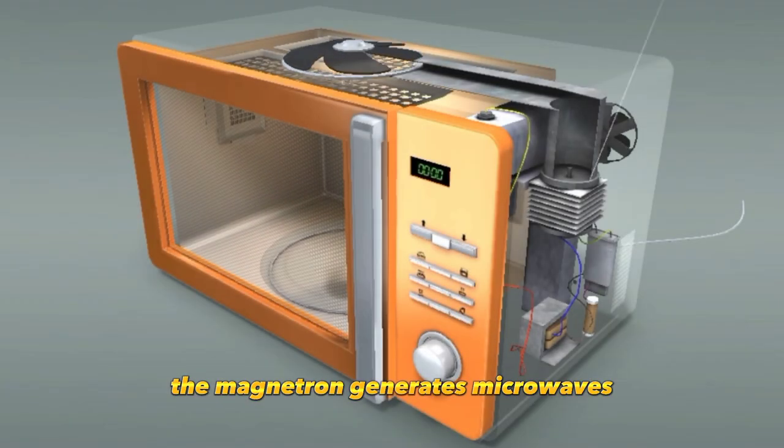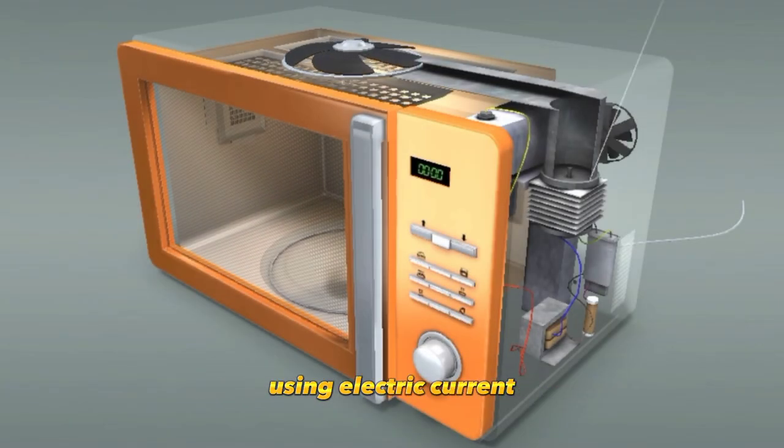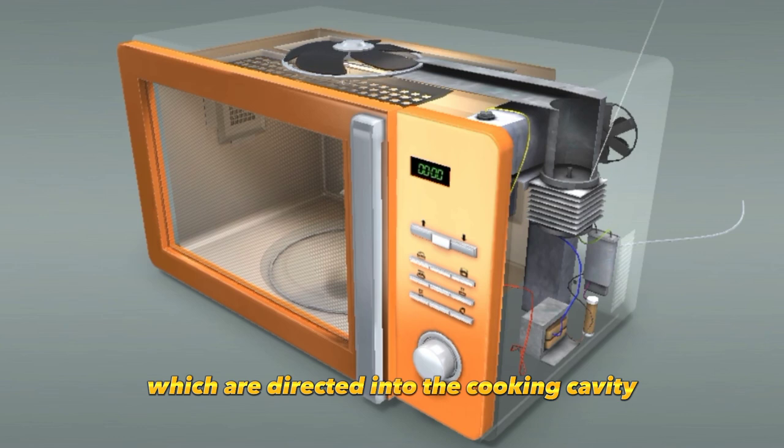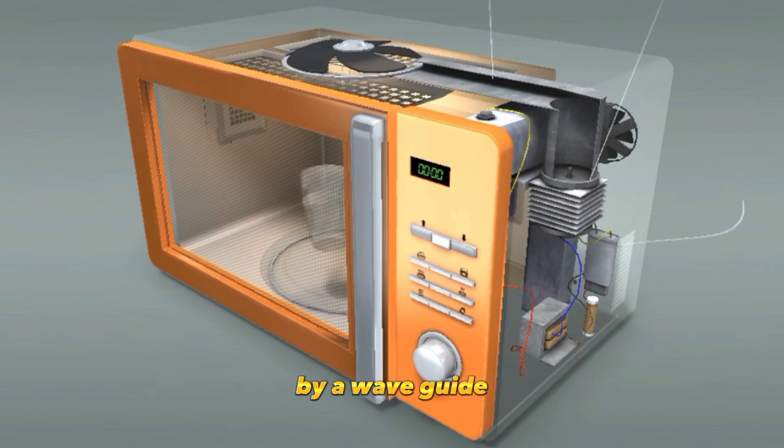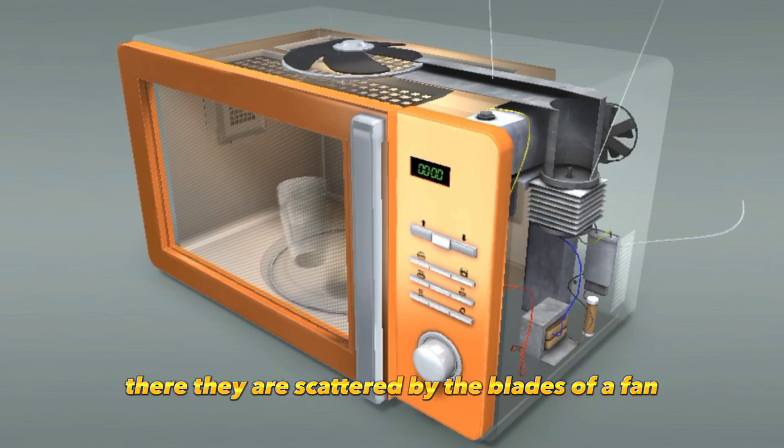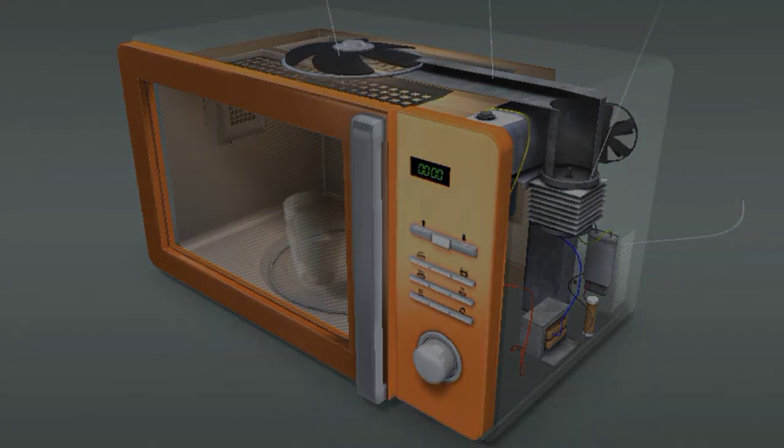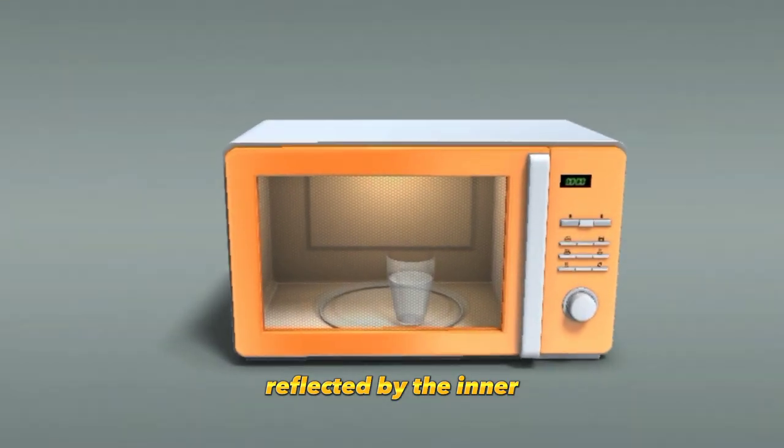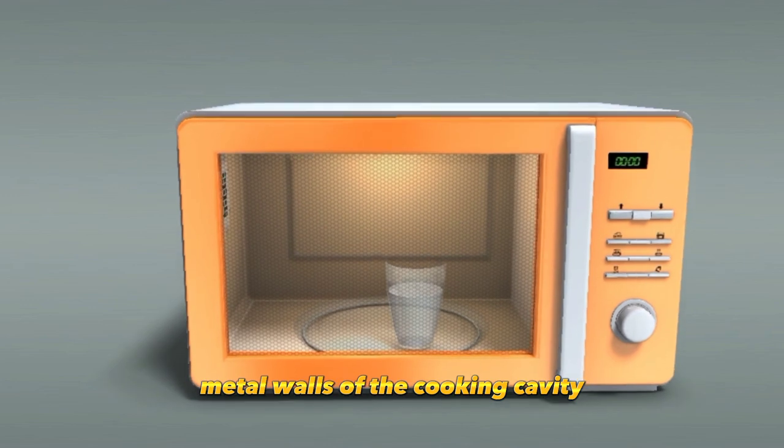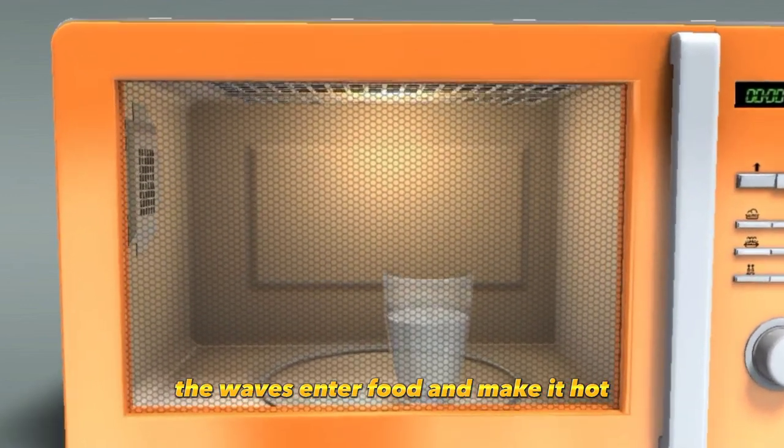The magnetron generates microwaves using electric current, which are directed into the cooking cavity by a waveguide. There, they are scattered by the blades of a fan. Reflected by the inner metal walls of the cooking cavity, the waves enter food and make it hot.